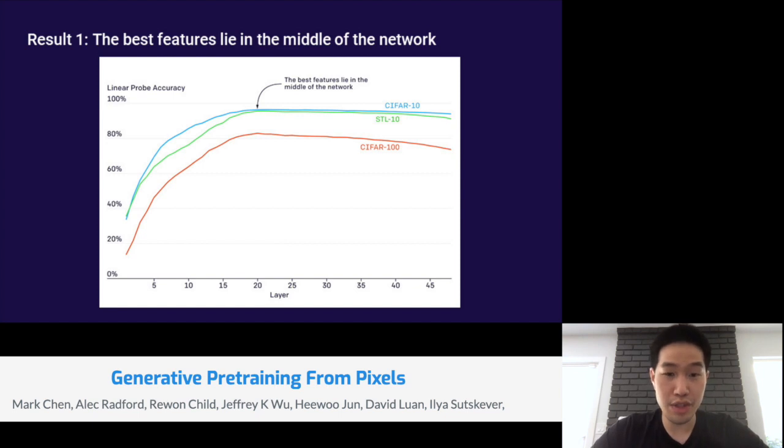The next few slides I'll be detailing our results. Our first result is that the best features lie in the middle of the network. Because we're training on a next pixel prediction objective, and this objective is not very clearly related to image classification, it's not clear that features from the last layer of our model should be most predictive of object category. Our first result shows that feature quality is actually a unimodal function of depth. If you look at this graph, we have on the x-axis the layer in the model, and on the y-axis we have linear probe accuracy on CIFAR-10. We see that the best features lie in the middle of the network across different datasets like STL-10 and also CIFAR-100.